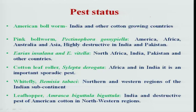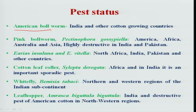This slide shows important insect pests and their occurrence in different countries. American bollworm is found throughout India and other countries, and was recently recorded in Brazil. Pink bollworm occurs throughout India and in other countries like America, Africa, and Australia.